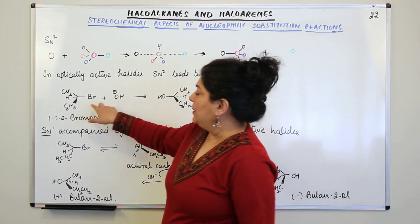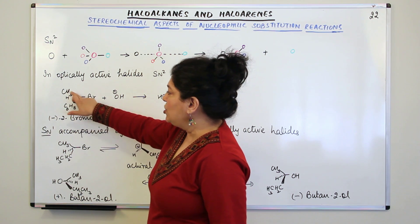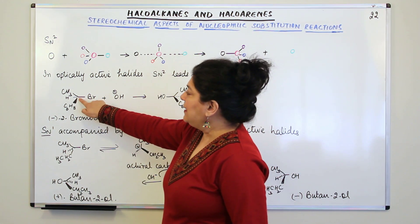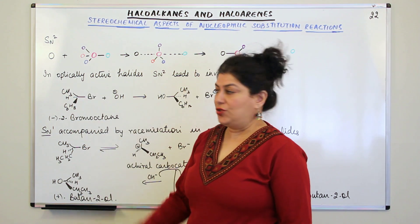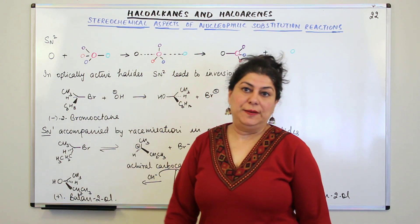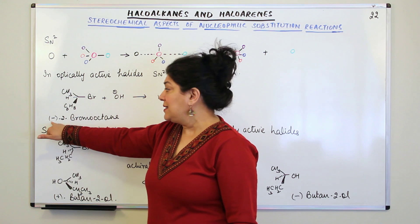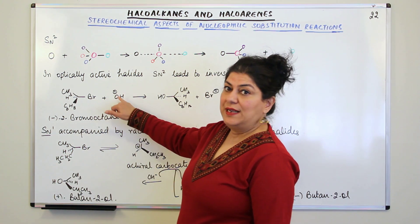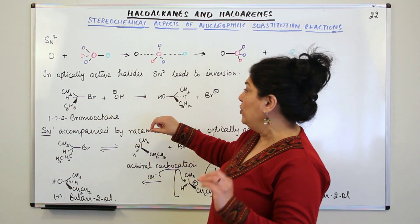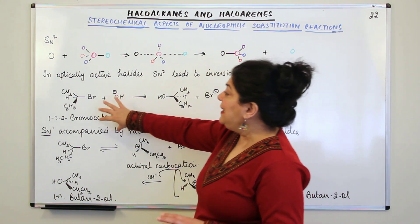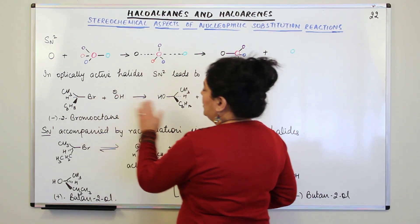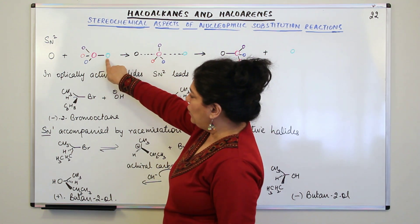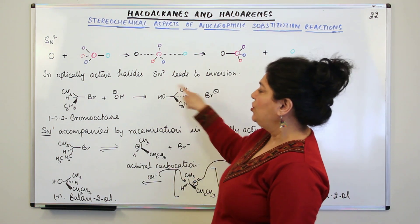Here is an example. This molecule is 2-bromooctane — bromine is attached to the second carbon, which is the chiral carbon. To the second carbon you have CH₃ on one side, a hydrogen, and C₆H₁₃. The minus sign indicates it is levorotatory, so we have (−)-2-bromooctane. When this is hydrolyzed — when it reacts with OH⁻ — the nucleophile OH⁻ attacks by SN2 mechanism and leads to inversion of configuration. The bromine was on one side, and in the product after SN2, the OH will be on the other side. So we see inversion of configuration has occurred.